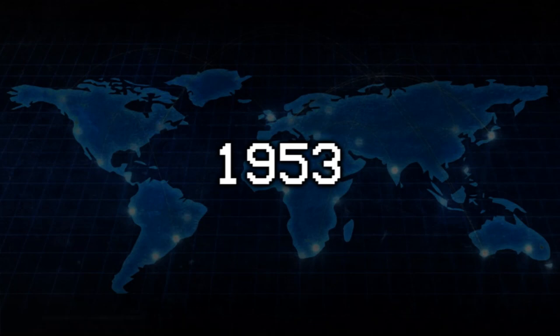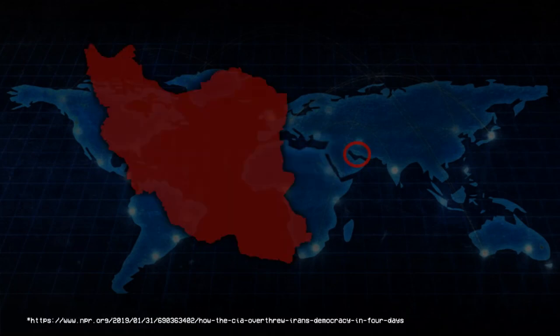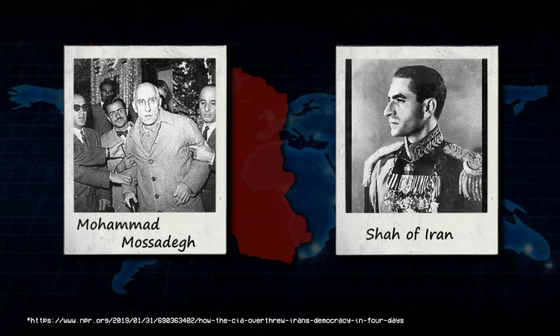1953. Iran. The CIA overthrows democratically elected Mohammed Mossadegh in a military coup, after he threatened to nationalize British oil. The CIA replaces him with the dictator the Shah of Iran, whose secret police, the SAVAK, is as brutal as the Gestapo.